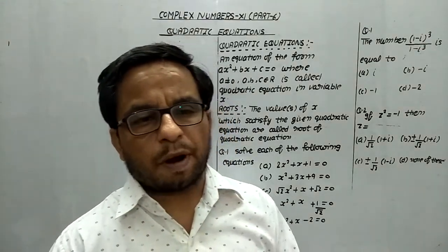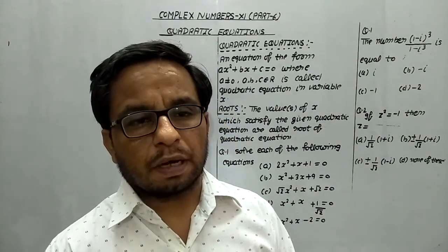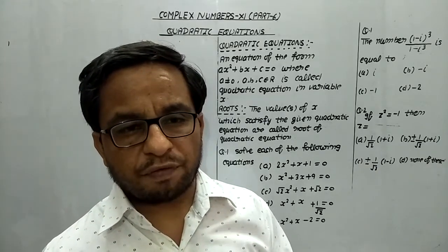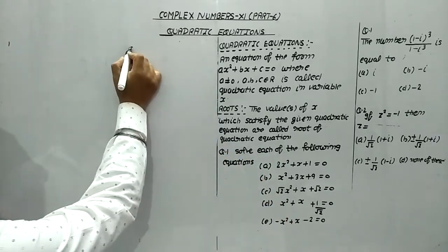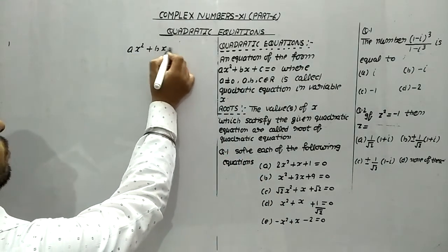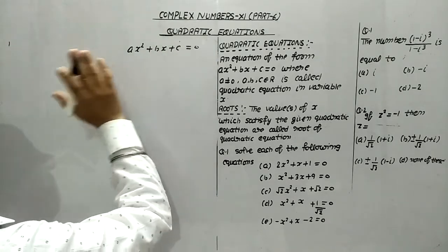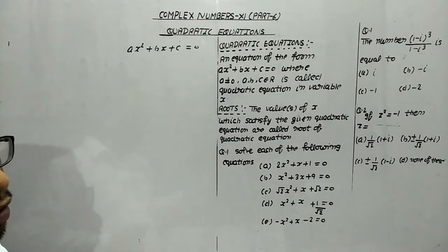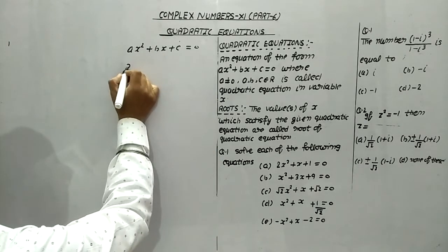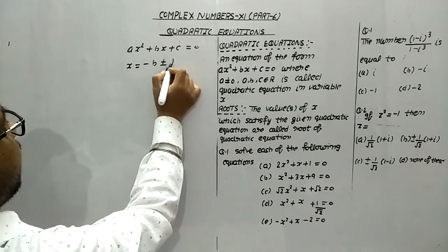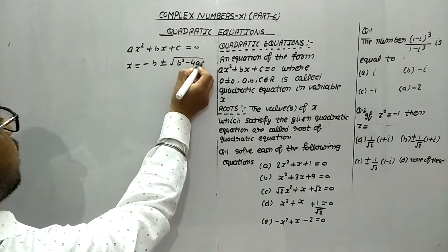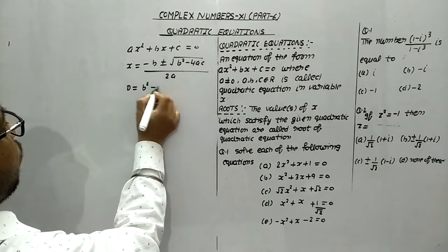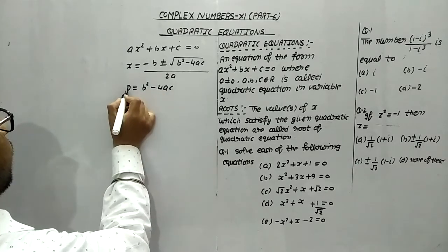Hello everyone. In this part 6 of complex numbers, I will explain quadratic equations. The standard form of a quadratic equation is ax² + bx + c = 0. The solution or roots are given by the quadratic formula: x = (−b ± √(b² − 4ac)) / 2a, where b² − 4ac is known as the discriminant of the quadratic equation.